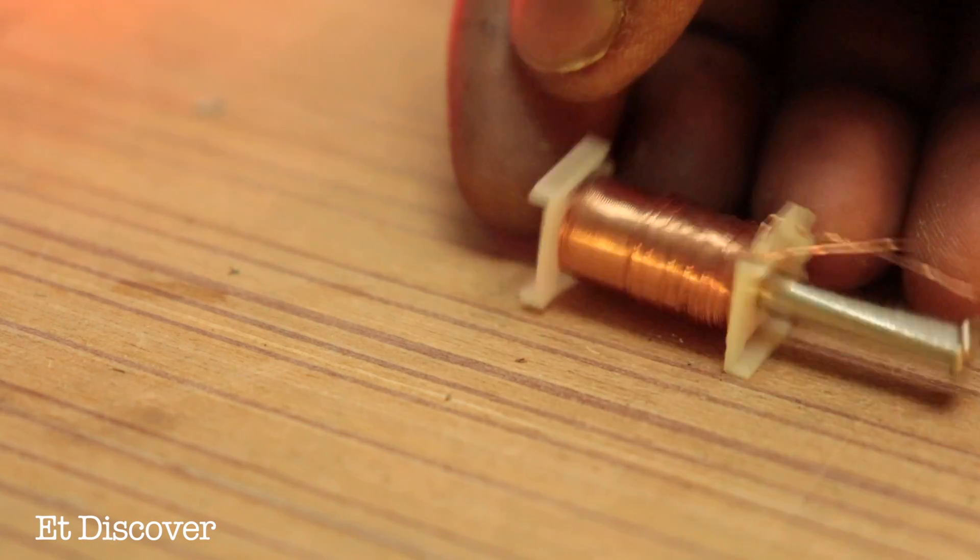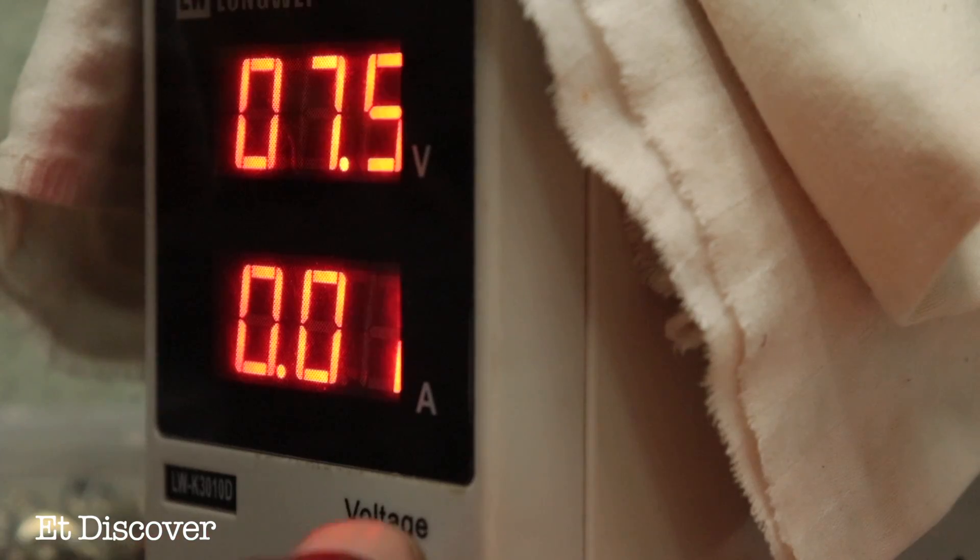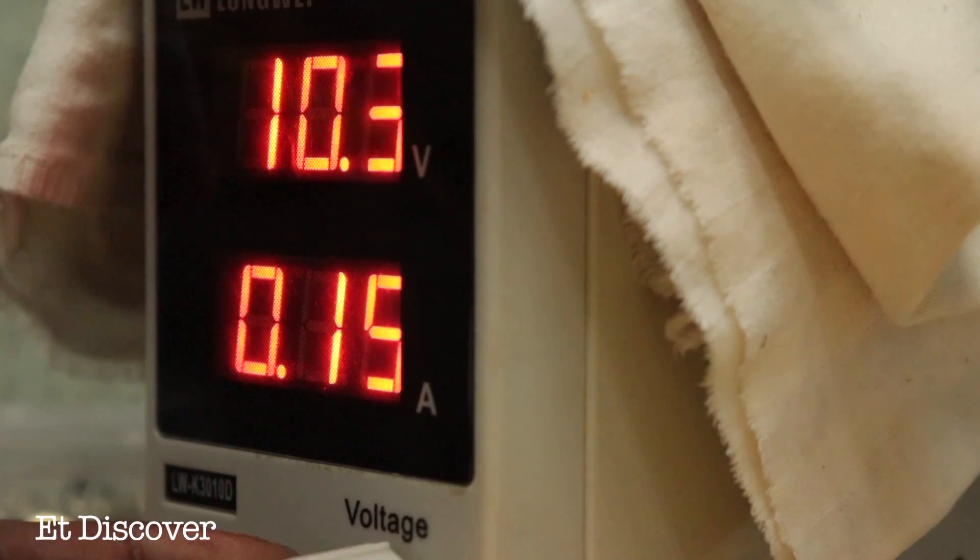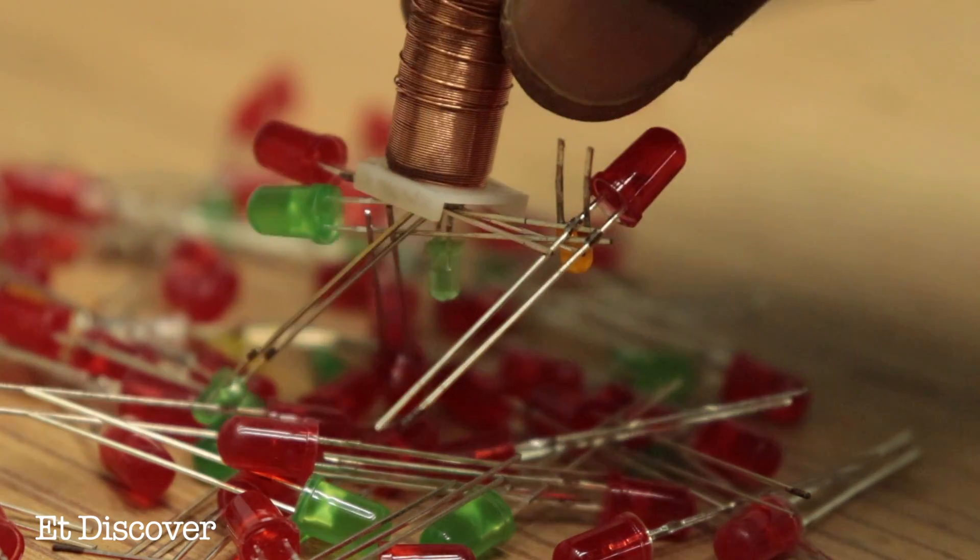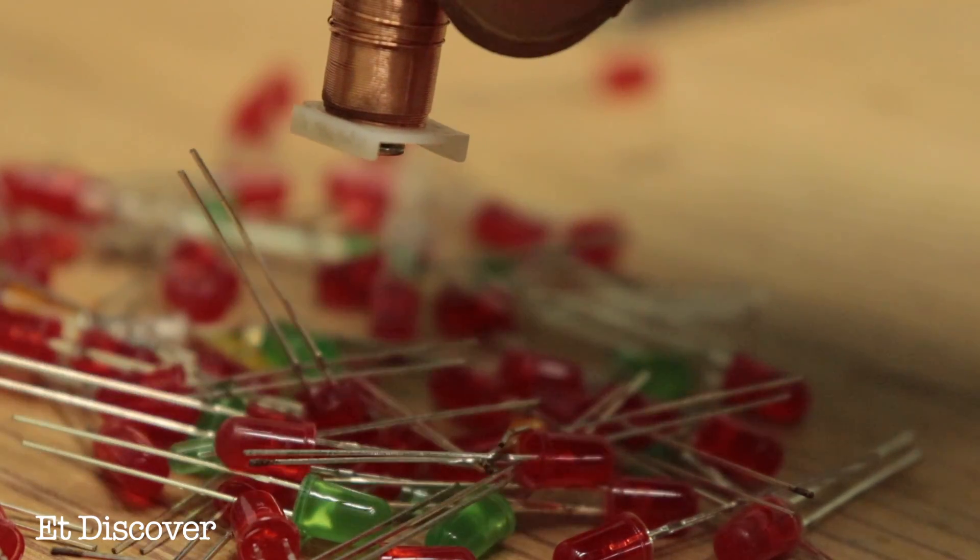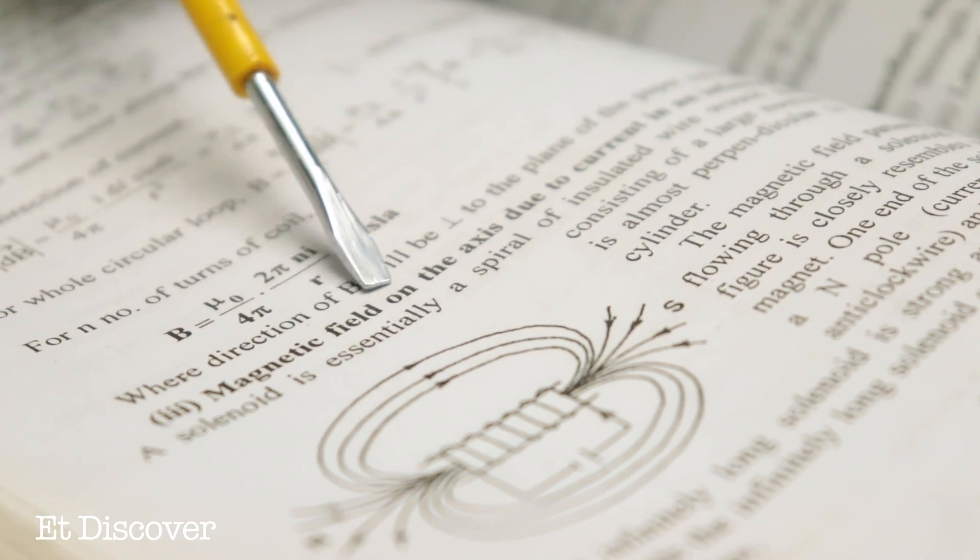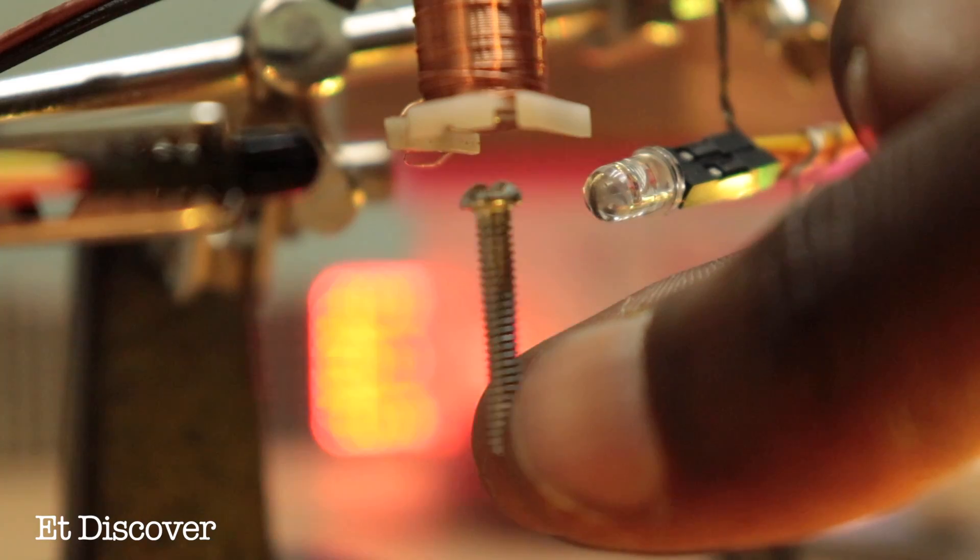Of course it's possible by using an electromagnet. If you give more or less voltage to the electromagnet, its magnetism will increase and decrease. It's a very common subject. Let's find out how it can be made.